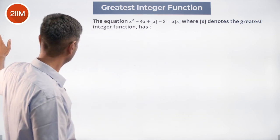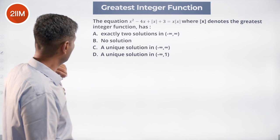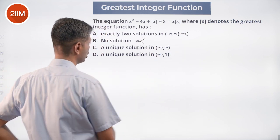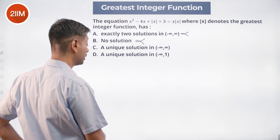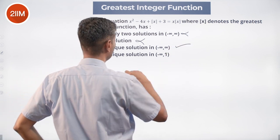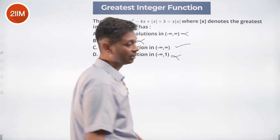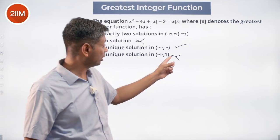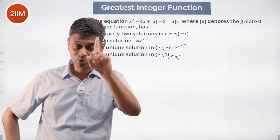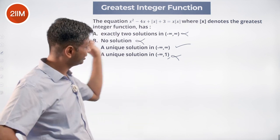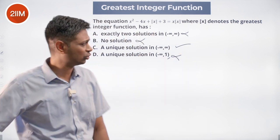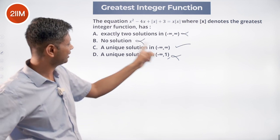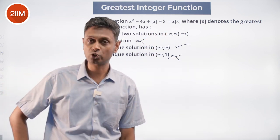Let's look at the choices. Exactly two solutions — no. No solution — no. A unique solution in minus infinity to infinity — yes. Unique solution in minus infinity to 1 — no, because that interval does not include 1. So there is one solution in the range minus infinity to infinity. The answer is choice C — for chocolate.